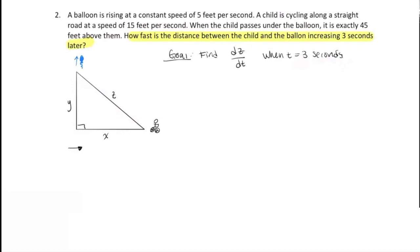So what are we given? We're given a couple pieces of information. The child is cycling along a straight road at a speed of 15 feet per second. And the child is going in the X direction. So we're given that dX/dt is equal to 15 feet per second.